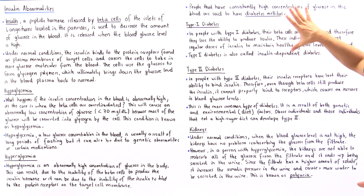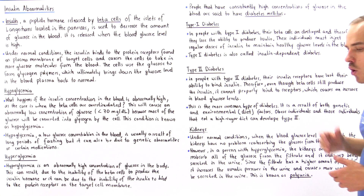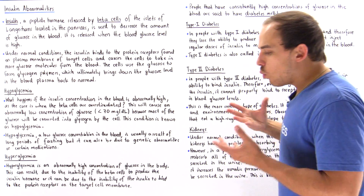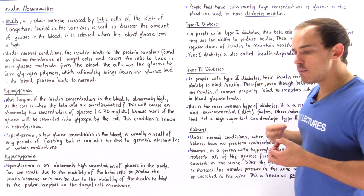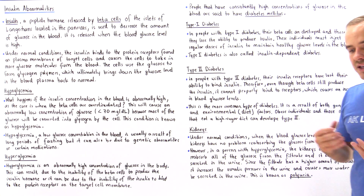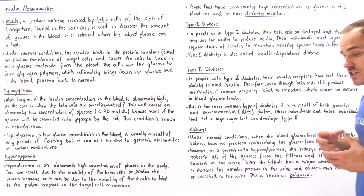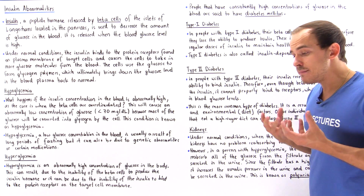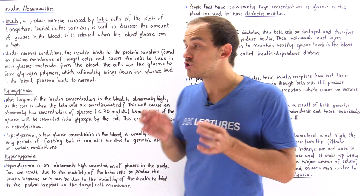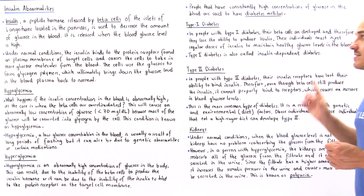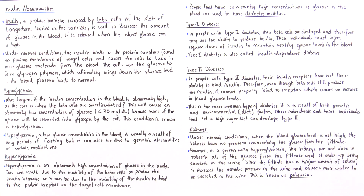Why would the beta cells actually be destroyed? One reason is an autoimmune disease. In some individuals — and this is genetic — the body's own immune system cells actually destroy the beta cells of the pancreas, and this can lead to type 1 diabetes.